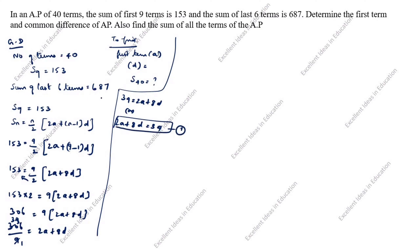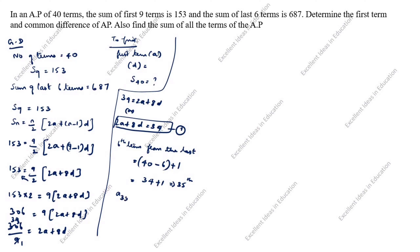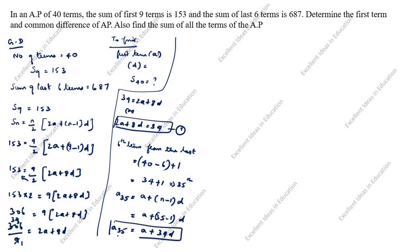Next, the sum of last six terms is 687. The sixth term from the last is the (40 − 6 + 1) = 35th term. So a₃₅ = a + (35 − 1)d = a + 34d.